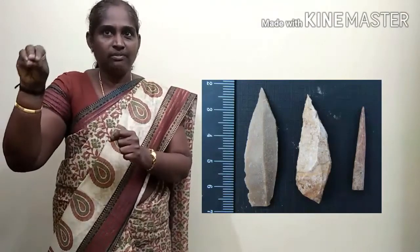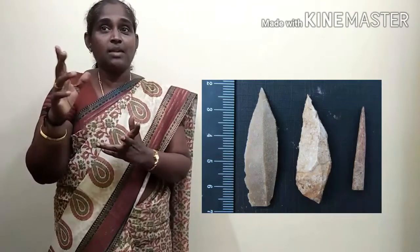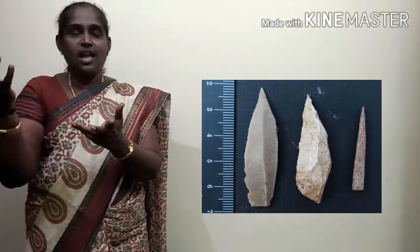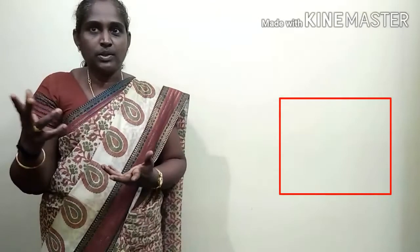They made tiny artifacts less than 5 cm in size — very small. They produced points, scrapers and arrowheads. They used geometric tools also — for example triangles and trapeze pieces. For these tools, wooden or bone handles were used.